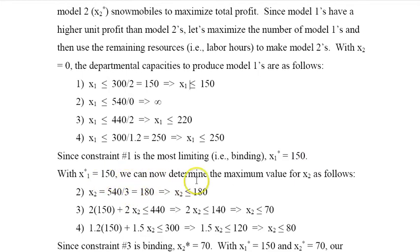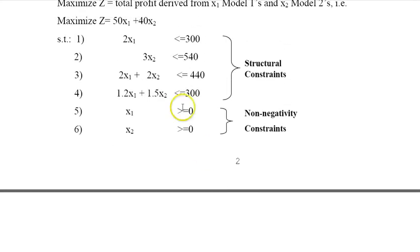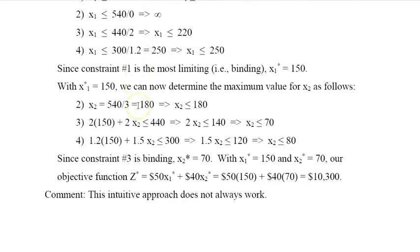Now with x1 equal to 150, I can go back and determine x2. The idea is I go back here - there's no x2 here, so as far as this one, x2 can be infinite. This one, I solve it - there's no x1 here, so by dividing 540 over 3, I get the limit on x2. Here I substitute x1 as 150 and find what x2 should be. Same thing here, I substitute x1 as 150.